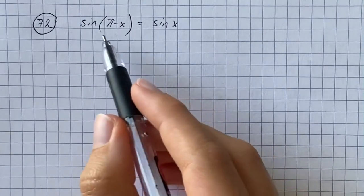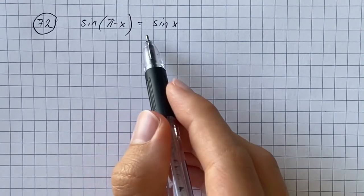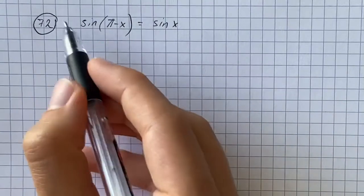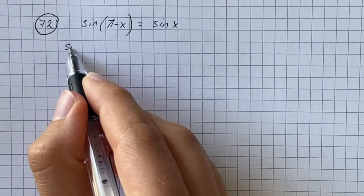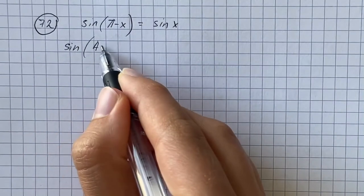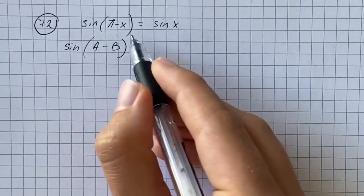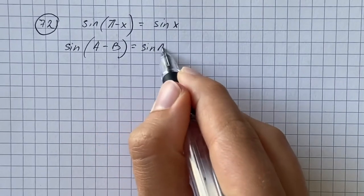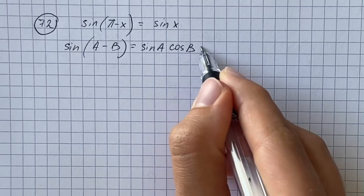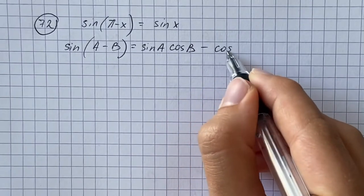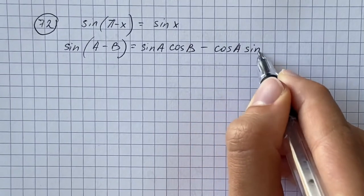We have to prove the given identity that sine of pi minus x equals sine of x. Here we're going to recall identities that sine of a minus b equals sine of a times cosine of b minus cosine of a times sine of b.